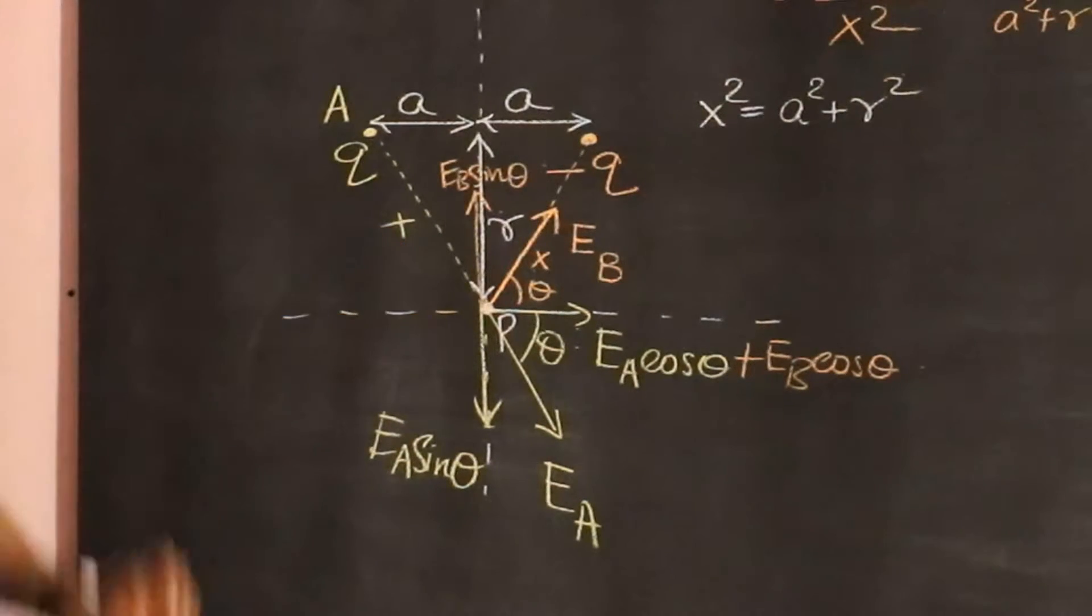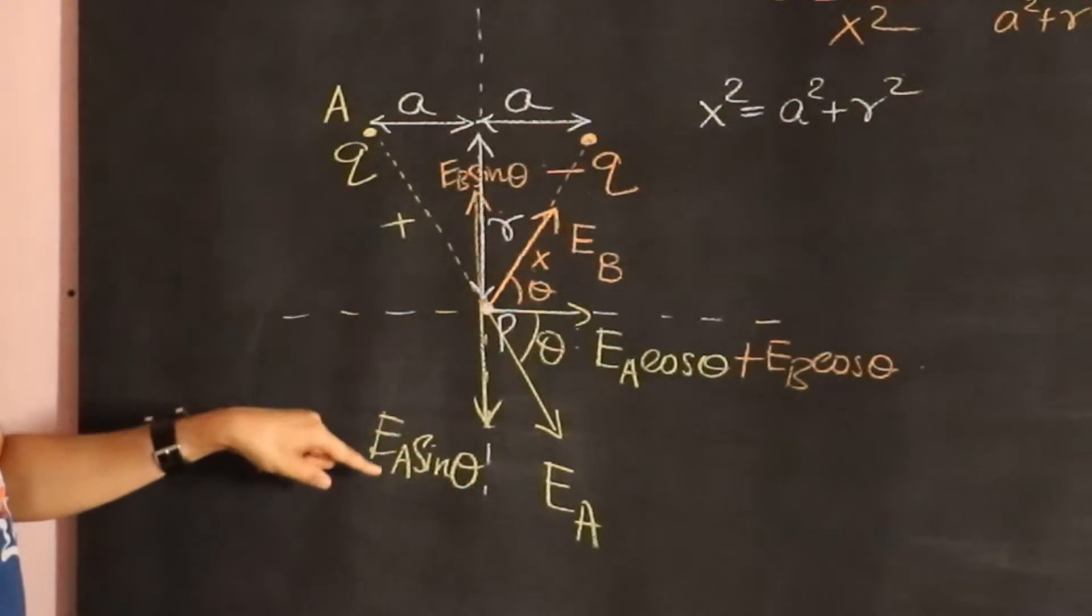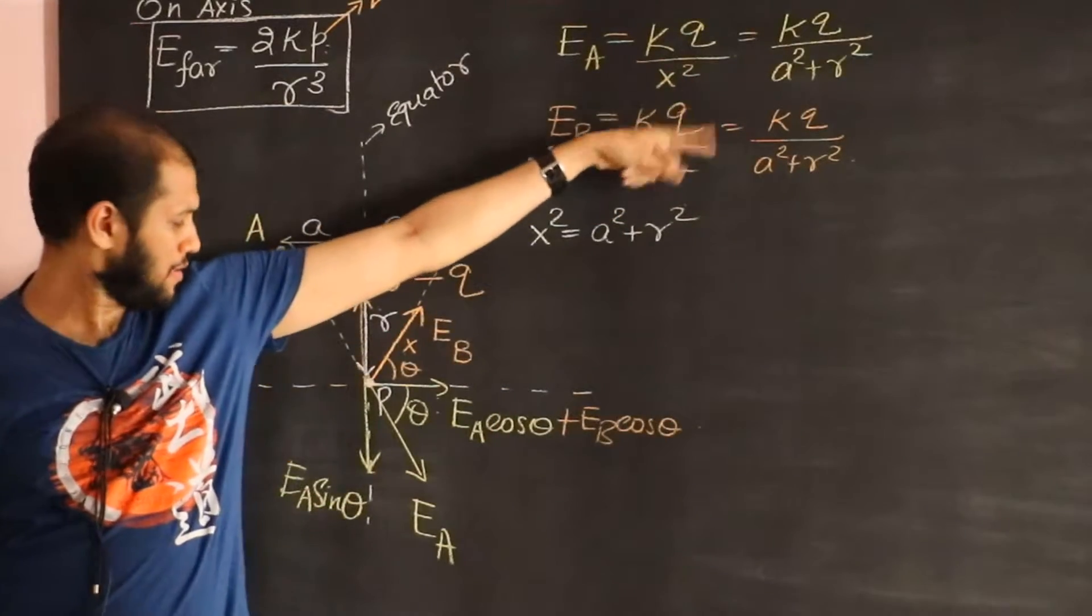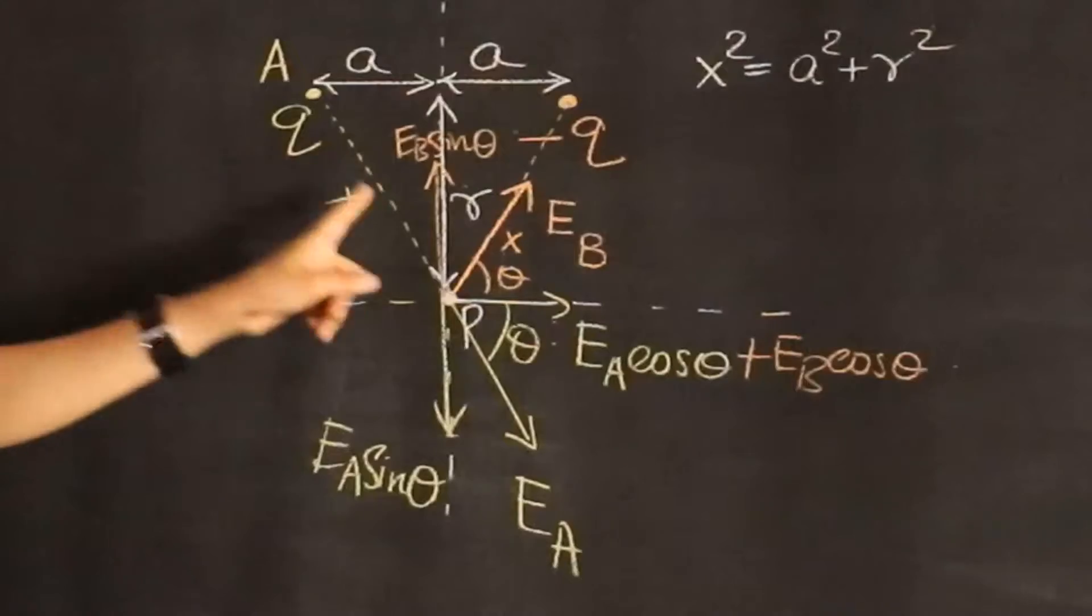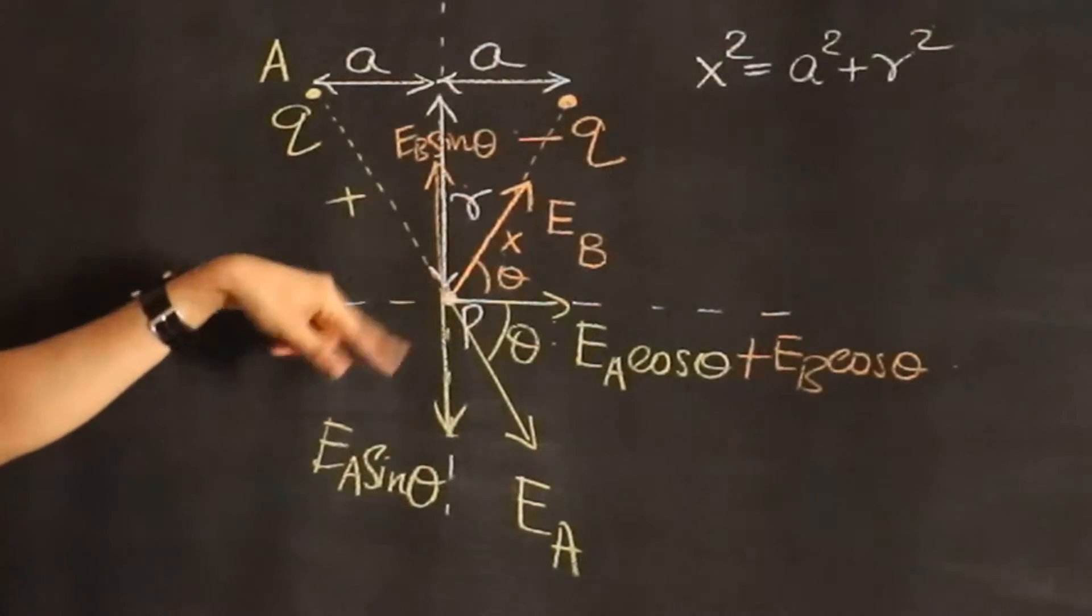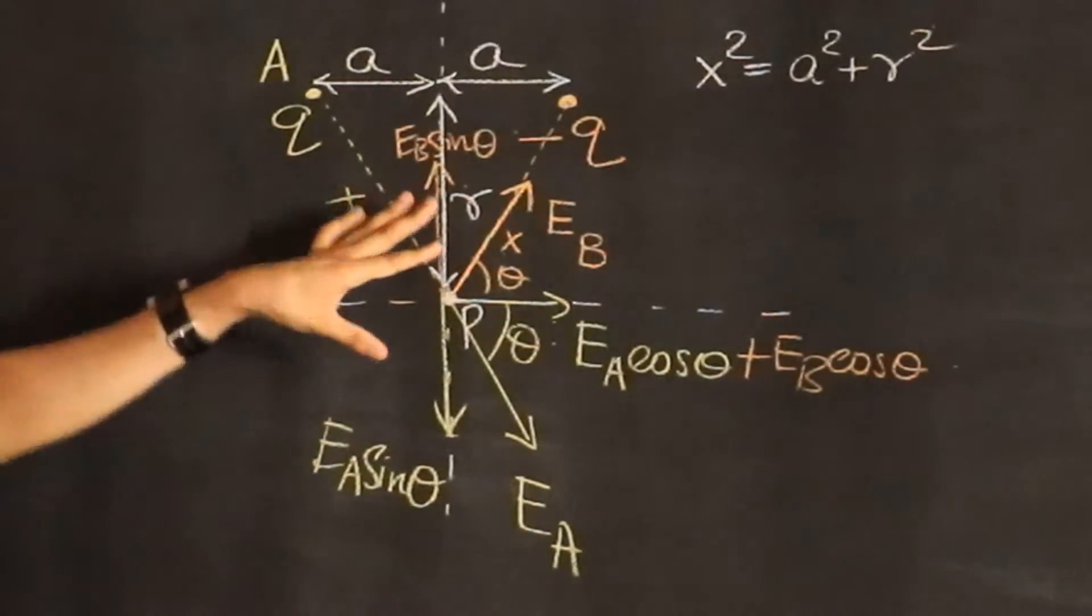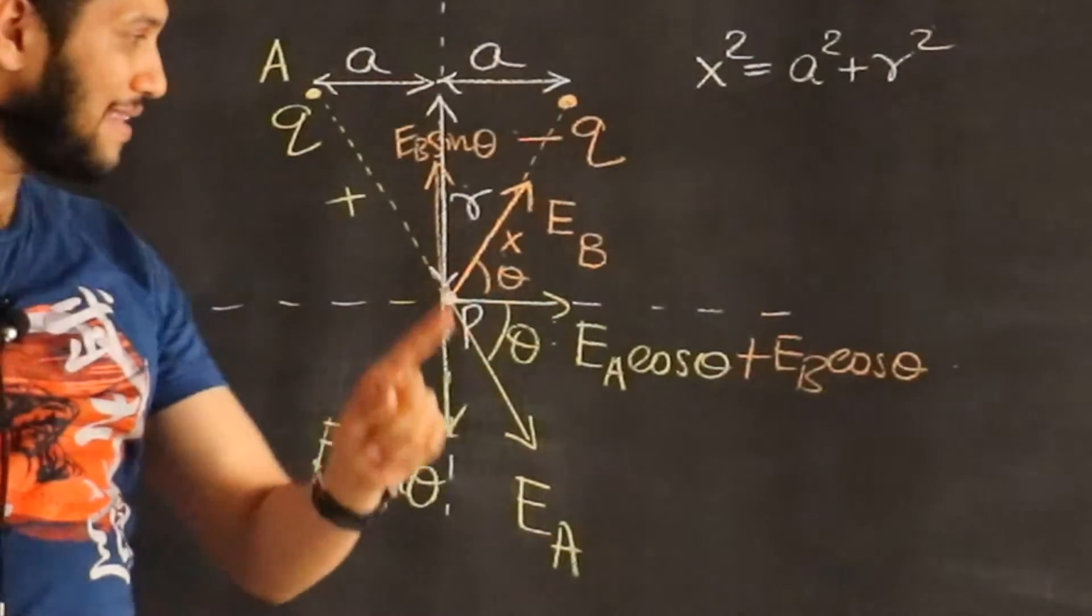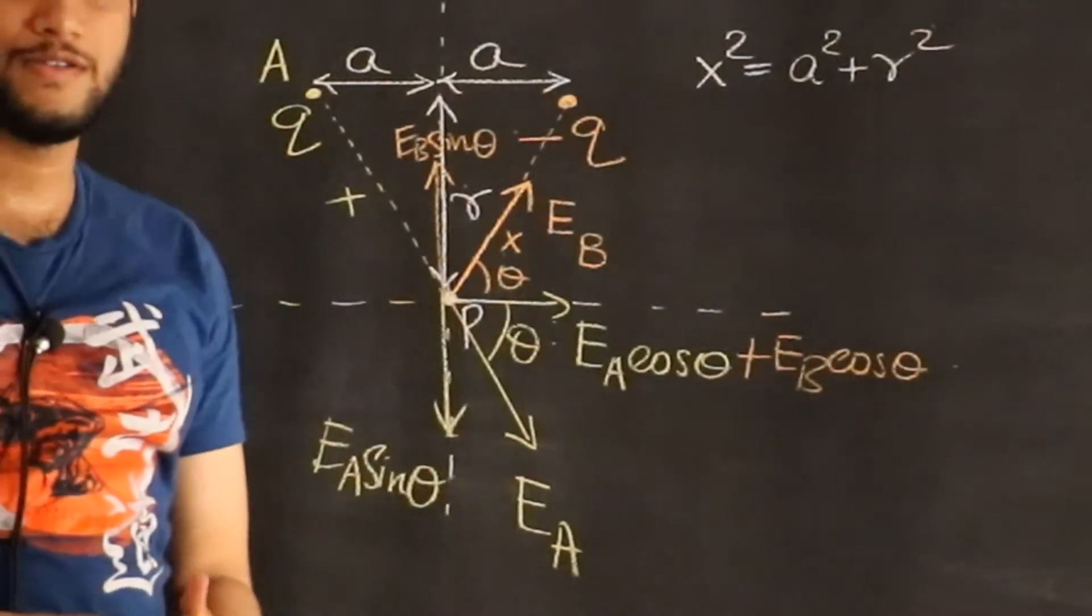Now if you look at this carefully, EA and EB have the same magnitude, as you can see. Therefore EA sine theta and EB sine theta are in opposite directions—they're going to cancel out. And these two guys are going to add up, so my net electric field will be along the horizontal.